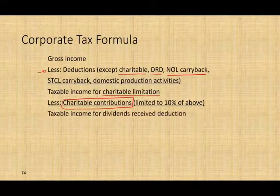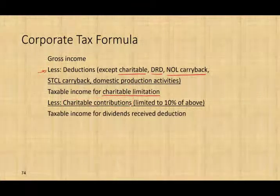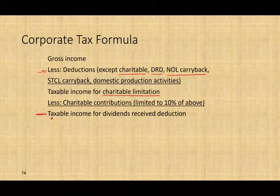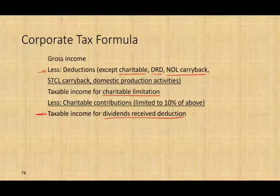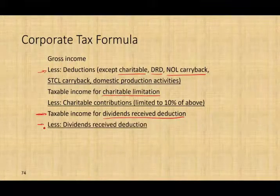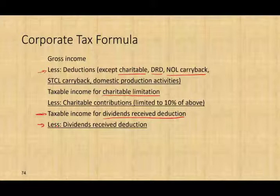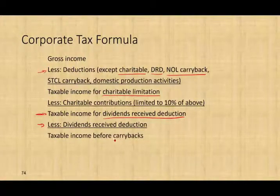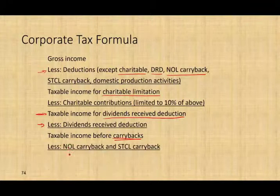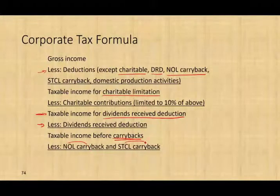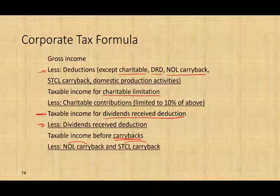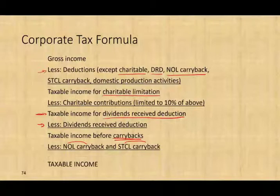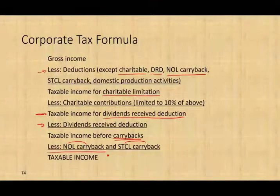From there, we get to taxable income for the dividend received deduction. We compute the dividend received deduction using that number, then deduct it to arrive at taxable income before carrybacks. If we have any carrybacks — such as NOL carrybacks or short-term capital loss carrybacks — we subtract them. Bear in mind, NOL now goes forward, not carryback. From this, we compute our final taxable income.